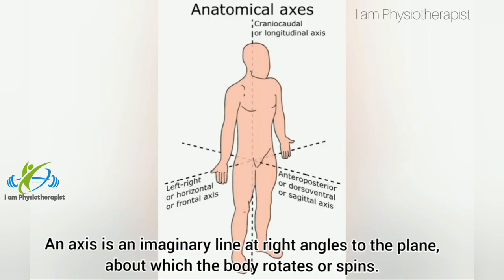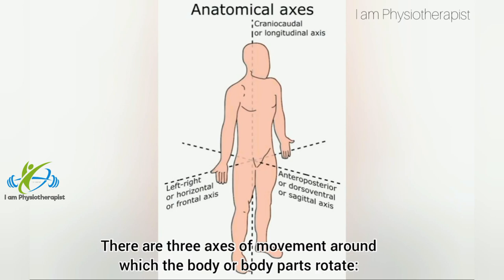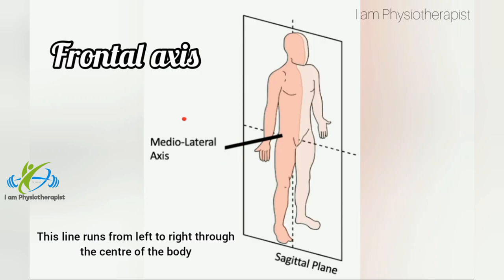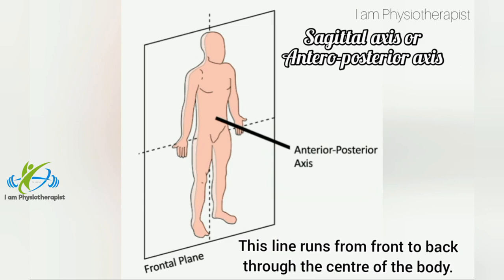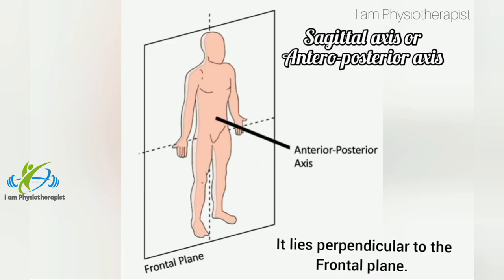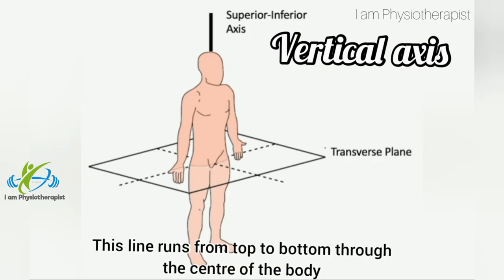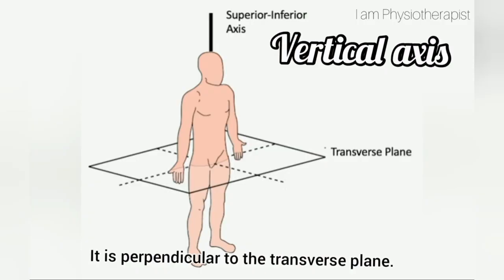An axis is an imaginary line at right angles to the plane about which the body rotates or spins. There are three axes of movement: the frontal axis, which runs from left to right through the center of the body perpendicular to the sagittal plane; the sagittal (antero-posterior) axis, which runs from front to back through the center of the body perpendicular to the frontal plane; and the vertical axis, which runs from top to bottom through the center of the body perpendicular to the transverse plane.